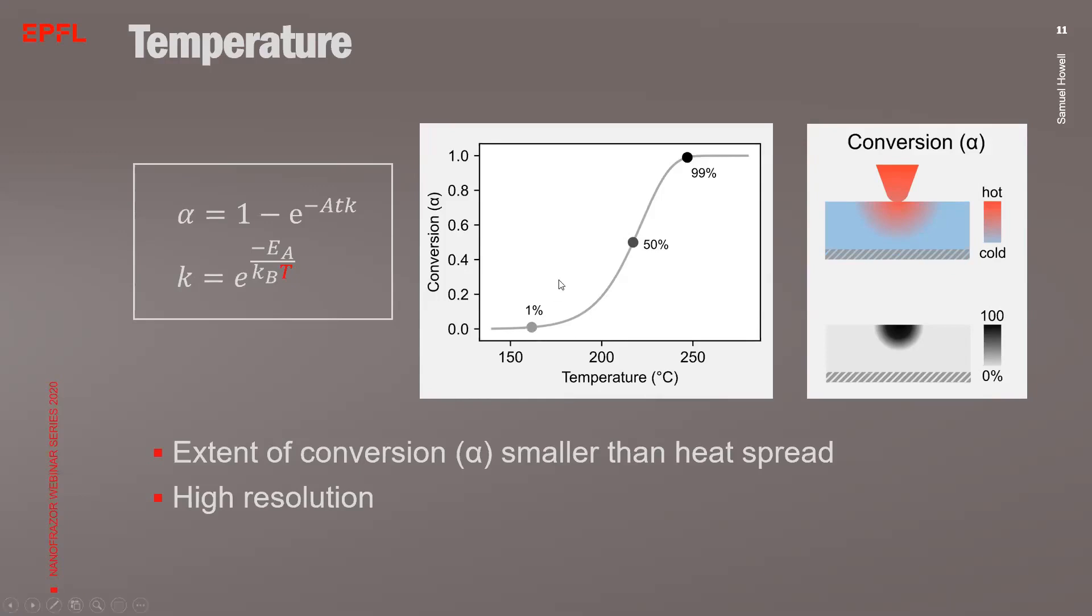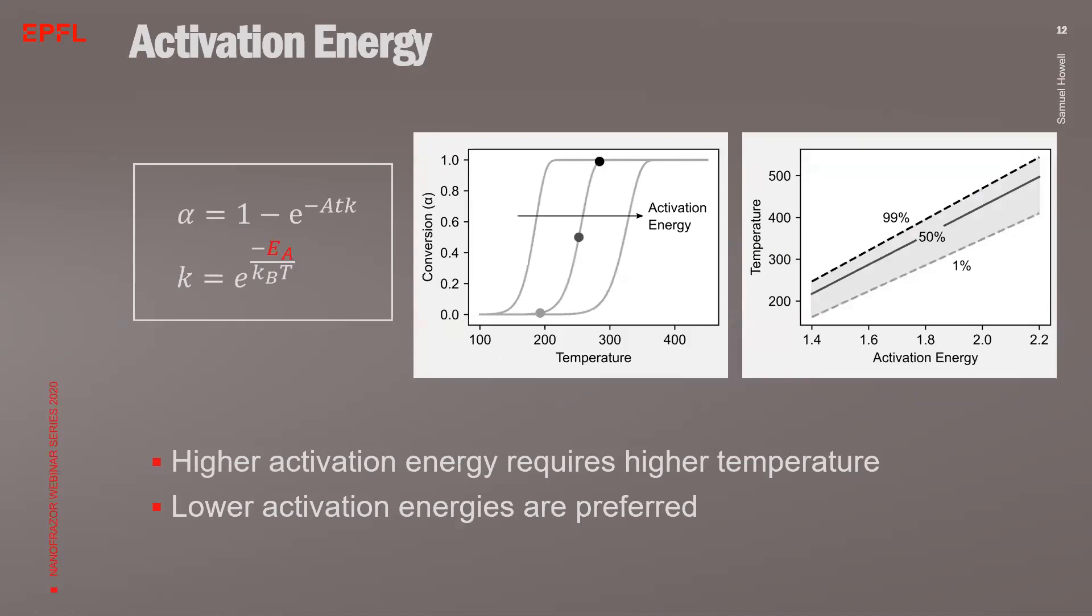Because the conversion does not depend linearly on the temperature, often higher resolution can be achieved than it would be assumed from the distribution of the temperature. This is good news because it allows for high-resolution patterning. Another parameter is the activation energy of the reaction. The higher the activation energy, the more heat is necessary to induce the reaction, and hence the higher the temperature needed to complete the reaction, as can be seen in the figure. In the graph, one can see that the reaction curve shifts towards higher temperatures with increasing activation energy. The temperature necessary for a reaction increases linearly with the activation energy, as can be seen in the right graph. As a general rule, reactions with low activation energies are preferred for thermal scanning probe lithography.